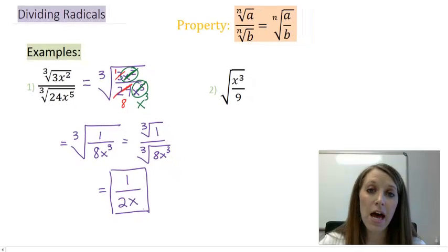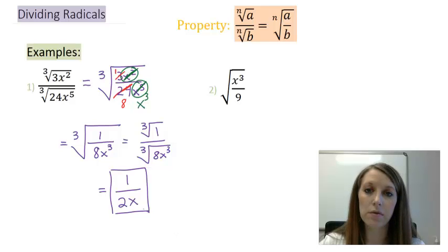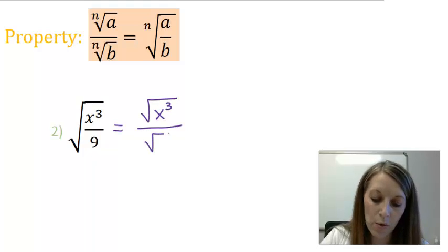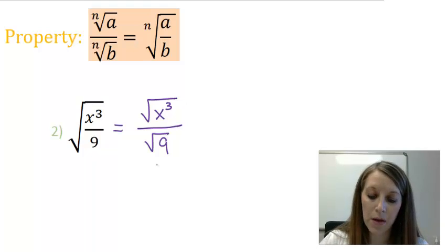If you haven't already, I suggest that you pause the video and work example 2 on your own. Same exact steps for example 1. Work each of these individually. So I have the square root of x cubed on top and the square root of 9 on the bottom. Let me start with the bottom first because it actually is the easier piece.